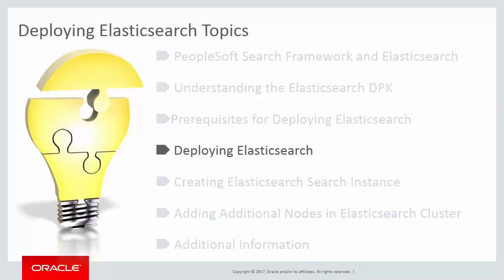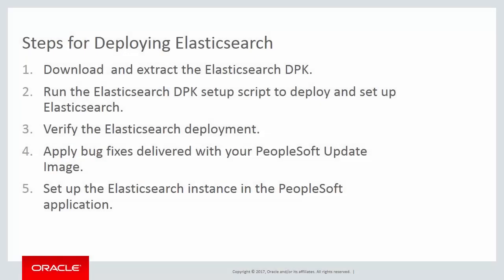The high-level steps for deploying Elasticsearch are: Step 1 — download and extract the Elasticsearch DPK; Step 2 — run the DPK setup script to deploy and set up Elasticsearch; Step 3 — verify the Elasticsearch deployment; Step 4 — apply bug fixes delivered with the PeopleSoft update image; Step 5 — set up the Elasticsearch search instance in PeopleSoft Search Framework. In this Spotlight series, we describe and demonstrate deploying Elasticsearch on a Windows environment.